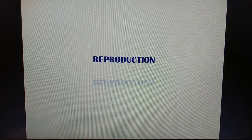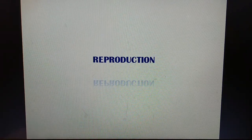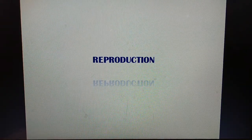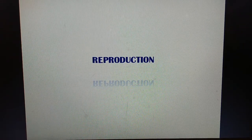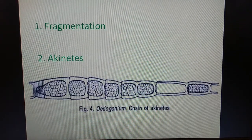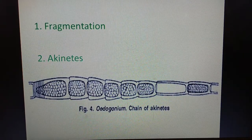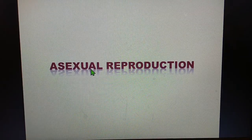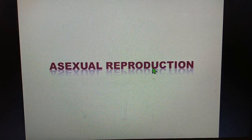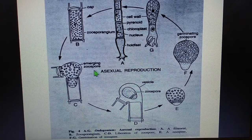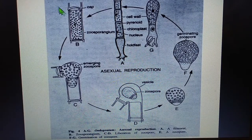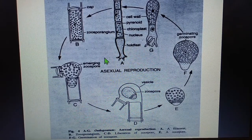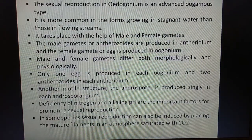In this second video, part two of reproduction of Oedogonium, I had already explained in the first video on vegetative reproduction which takes place through the zoospores, which form in the zoosporangium. Now let us take a look at the sexual reproduction in Oedogonium.